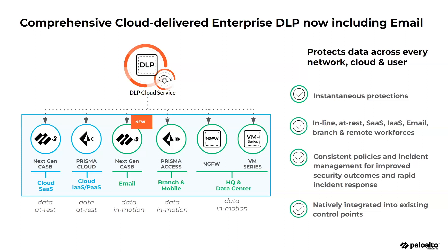If you look at how typical data loss is protected, it's either out-of-band, API-based, or inline. Historically, we've had email DLP covered by API-based, available via Prisma SaaS. Today we are launching it with the new SmartPost technology — a hybrid approach towards data protection, API and inline. Inline email DLP will be the new vector of data loss that we will have coverage against.